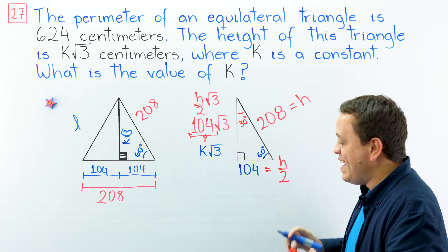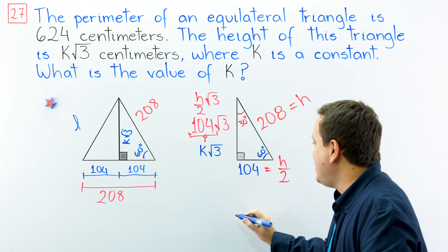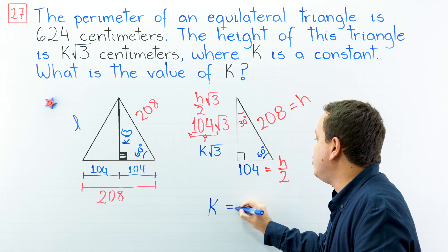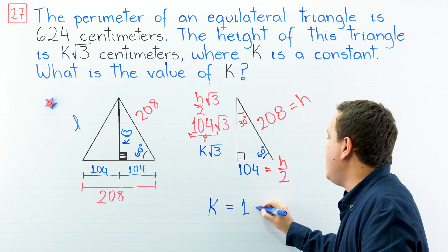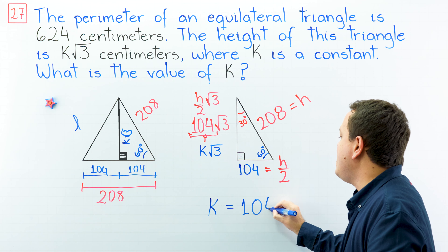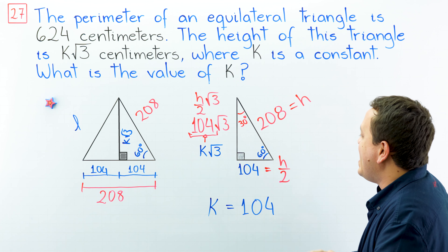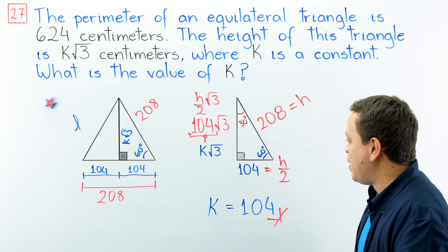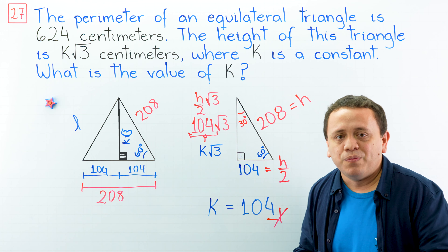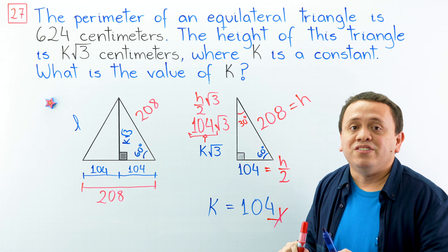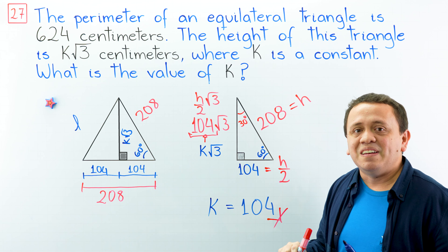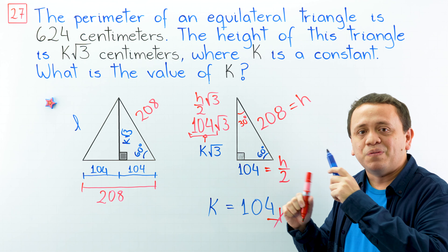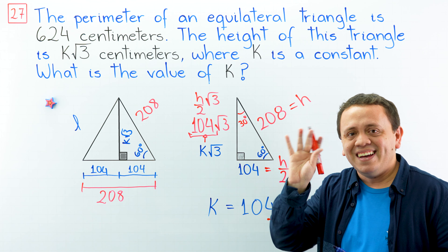That's it — that is our final answer. K is equal to 104, and we are done with this problem. That's all for today. We will continue with our SAT practice tests in the following videos. See ya!